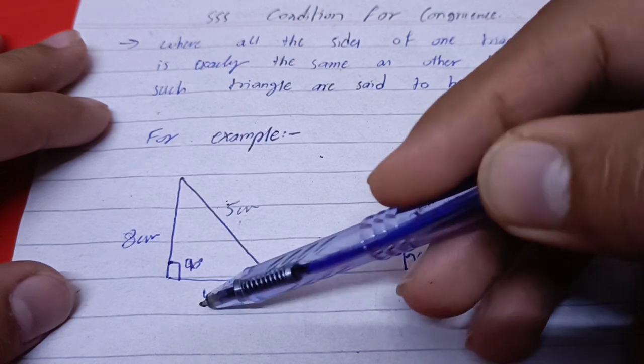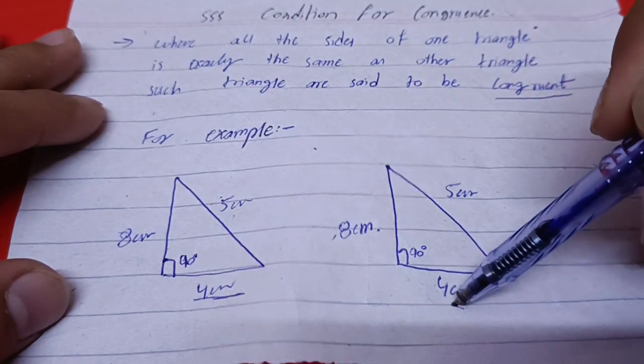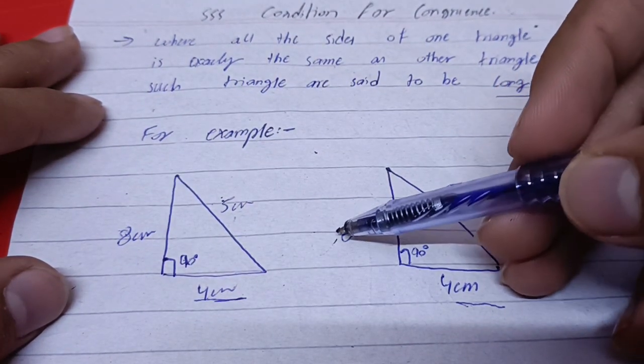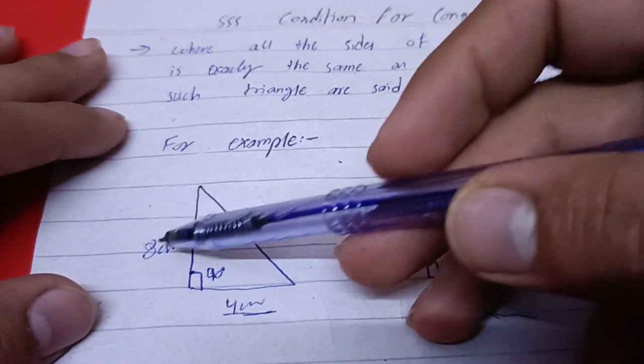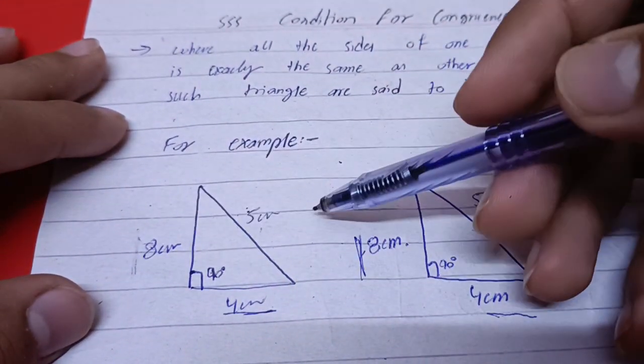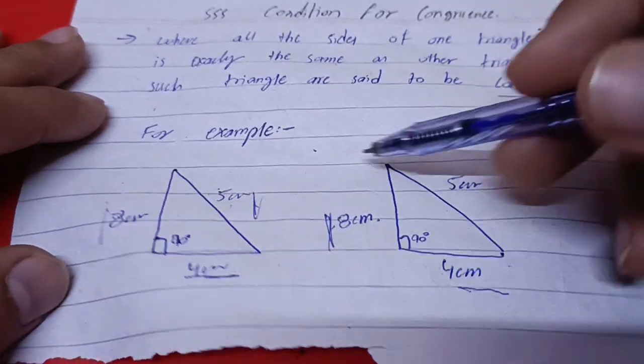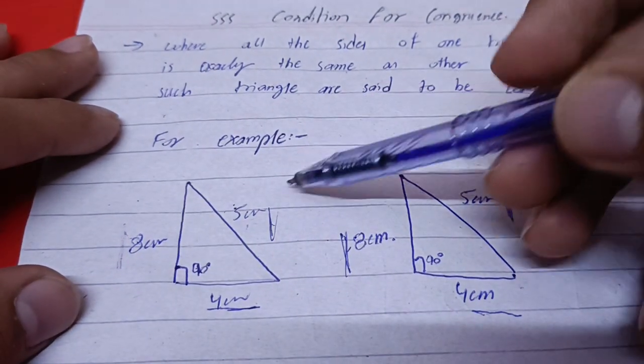If you have 4 cm in this triangle, then the other triangle also has 4 cm. If you have 8 cm here, then the other triangle also has 8 cm. Then the other side is 5 cm in both triangles.